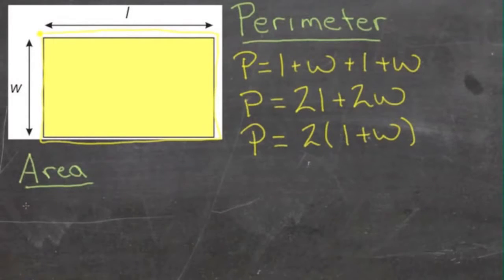So, we have the length of the rectangle, L, multiplied by the width of the rectangle, W, equals our area.